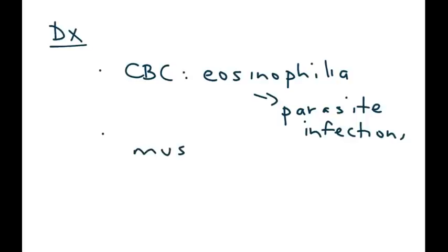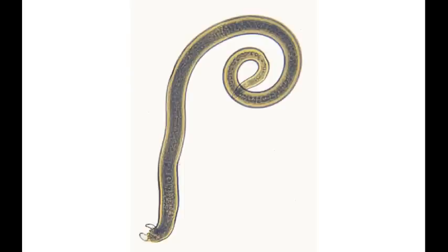A muscle biopsy can be done, although it usually isn't. If it is done, it can show the larvae inside the muscle cells. I'll show you a picture — first the actual worm — this is the Trichinella species.